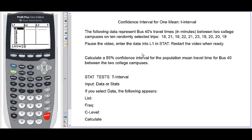Hi. In this video I'll go over constructing a confidence interval for one mean using the T interval on your calculator. The following data represent bus 40's travel times in minutes between two college campuses on 10 randomly selected trips.